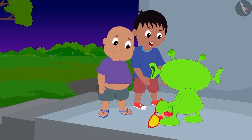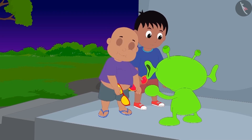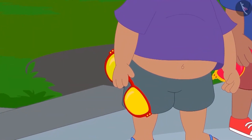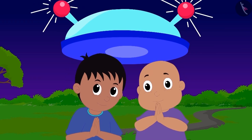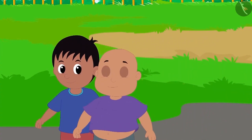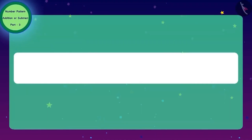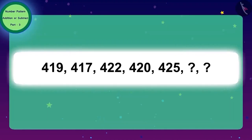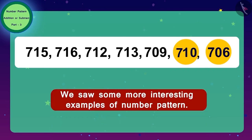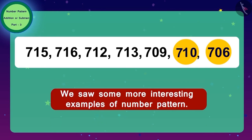Jeev appreciated Raju and Bablu for their intelligence and gave a pair of glasses to each as a gift. We will see the specialty of the glasses in the next lesson. Raju and Bablu are thanking you — well done, children! You have helped them a lot. Raju and Bablu have learned to identify number patterns. Have you learned it too? Solve these number patterns with your friends. In the next lesson, we will learn more interesting facts about mathematics.